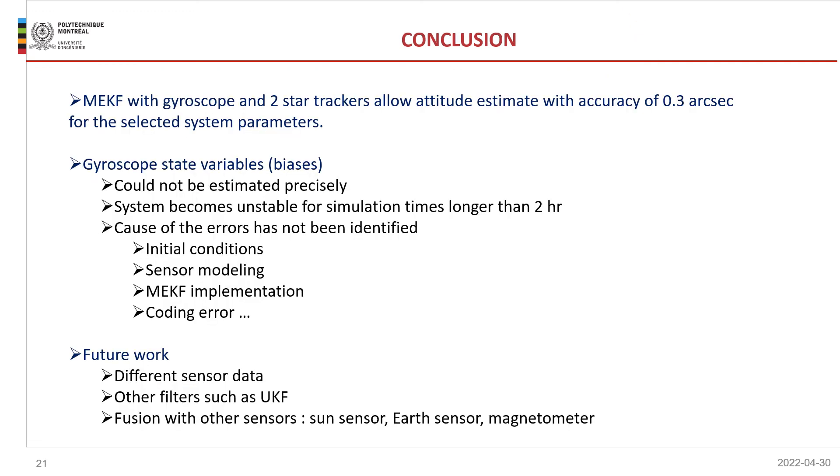We've already reached the end of the presentation. We've shown that MEKF with one gyroscope and two star trackers allows an attitude estimation with an accuracy of 0.3 arc seconds. But we've also shown that we encountered some problems during our simulation. Mainly, we were not able to estimate correctly the biases of the gyroscope. So what was the problem? Well, we're not sure. It could be initial conditions, the modeling of the sensor, the implementation of the MEKF, and we're not ruling out coding errors, although we haven't found any, of course.